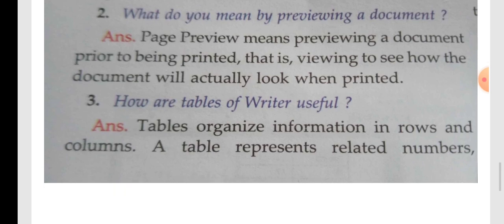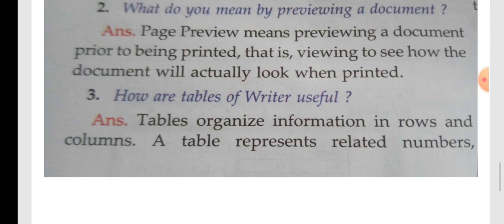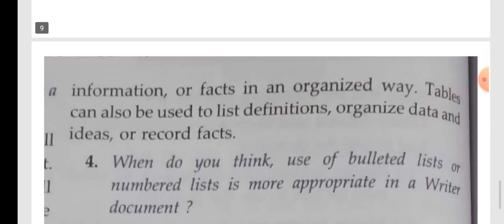How are tables useful in Writer? Tables organize information in rows and columns. Where rows and columns intersect, they make a cell. A table represents related numbers, information, or facts in an organized way. Tables can also be used to define list definitions, organize data and ideas, or record facts.